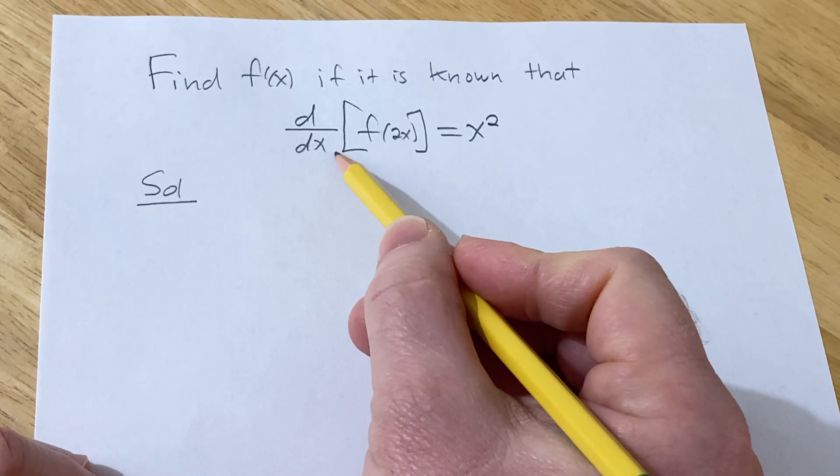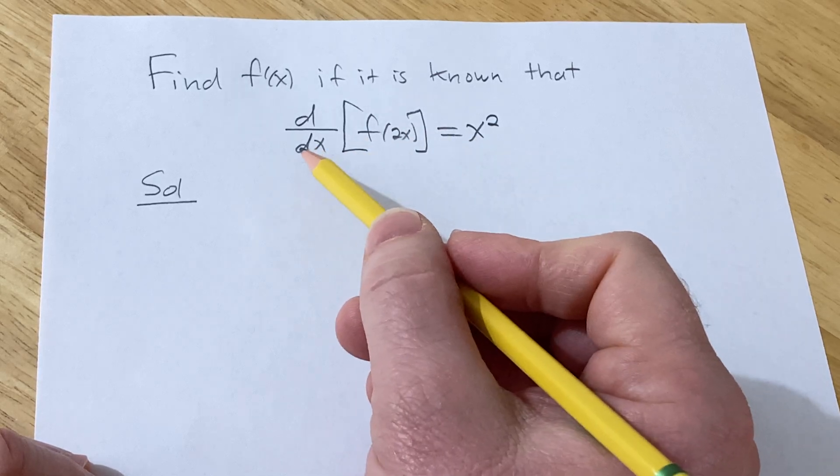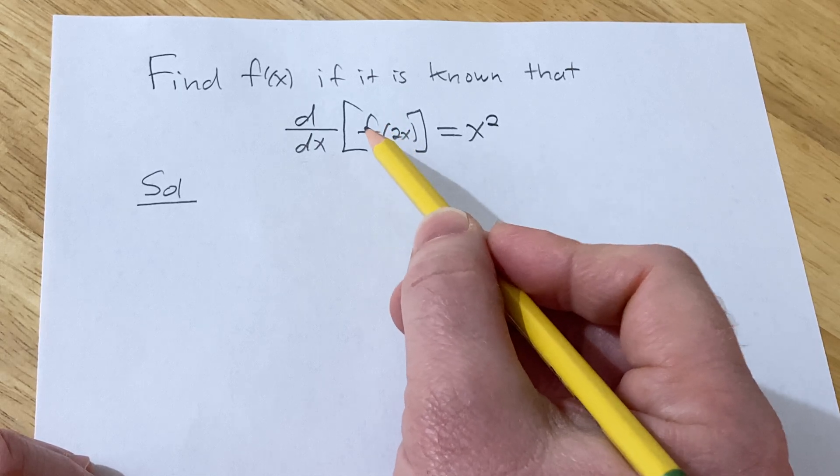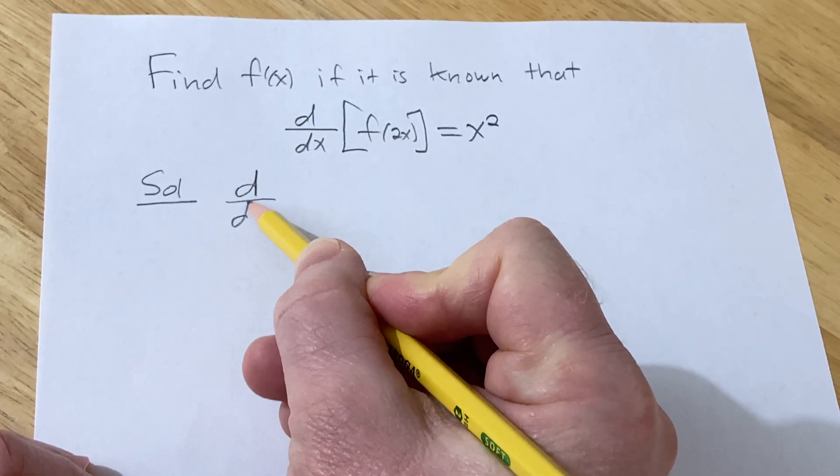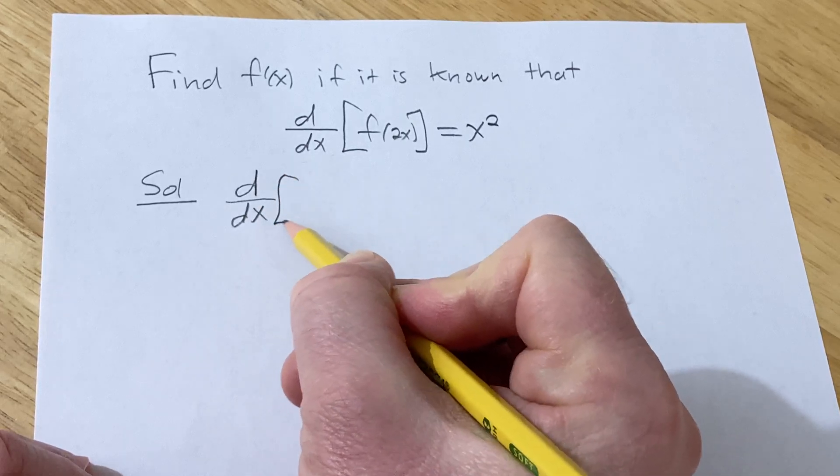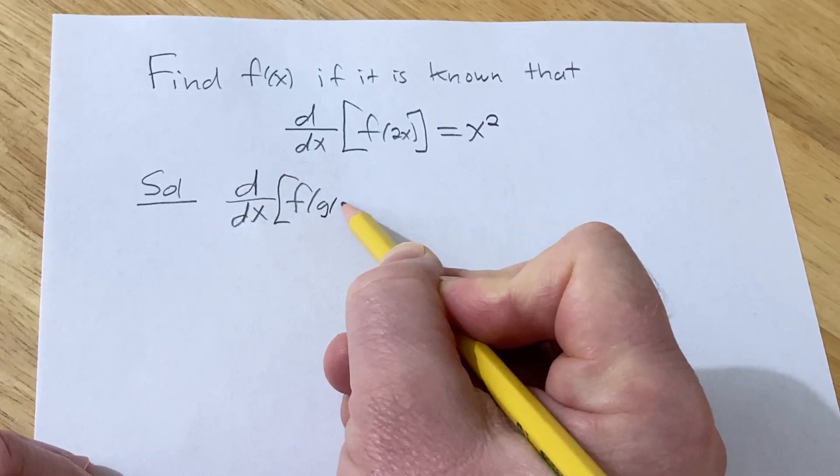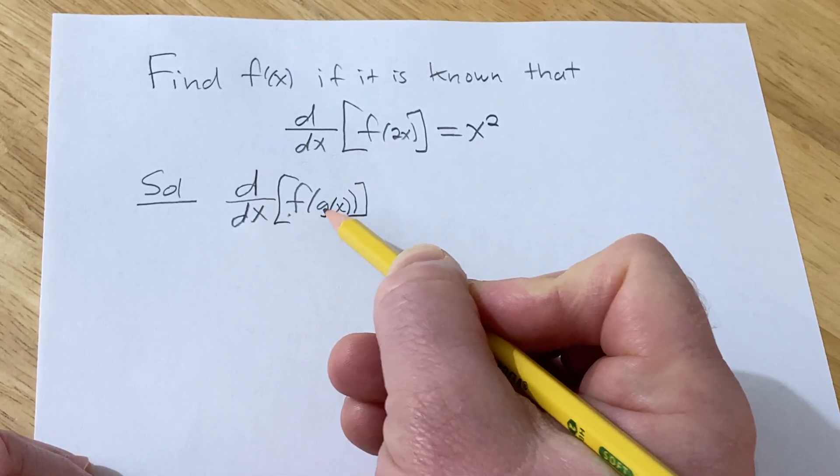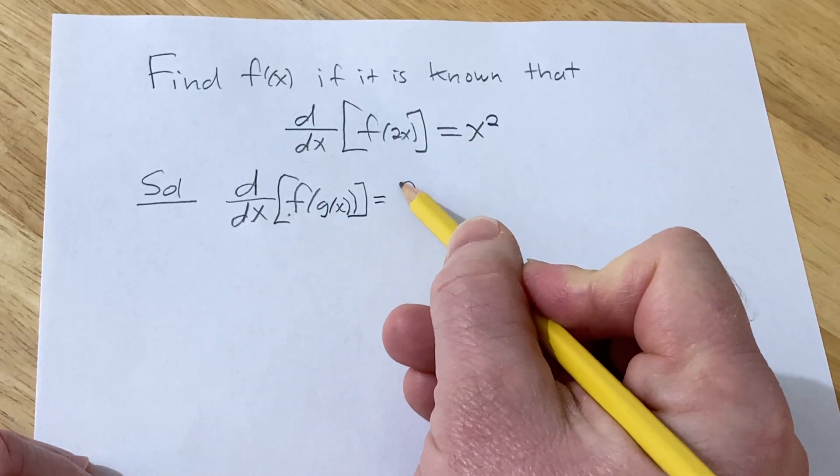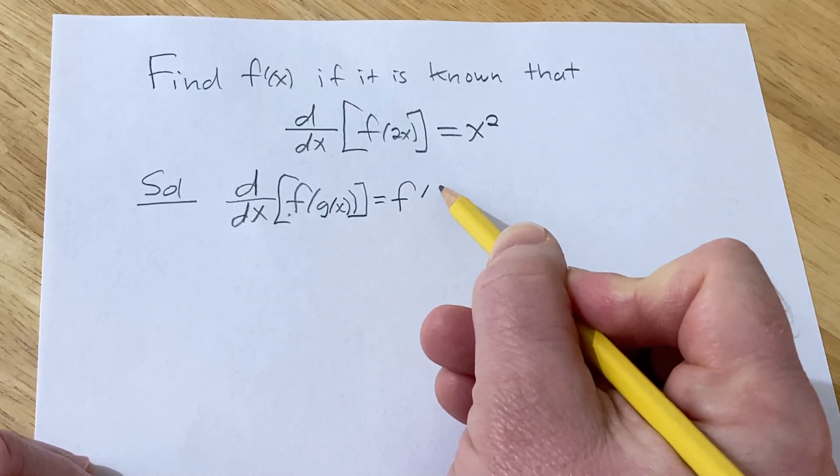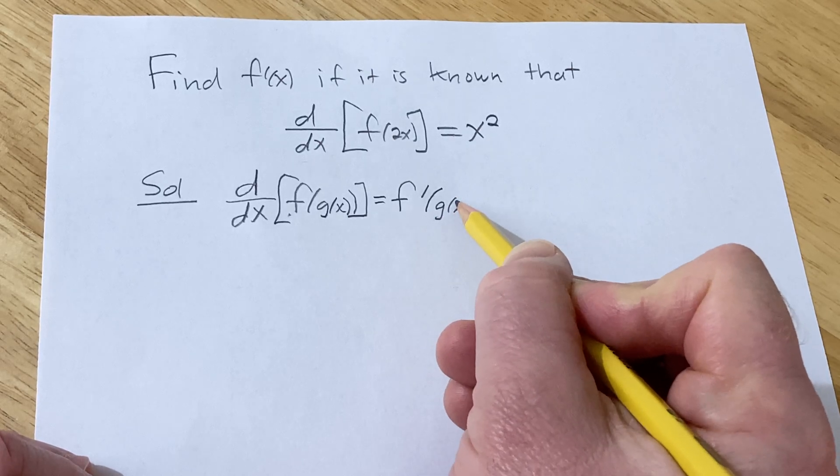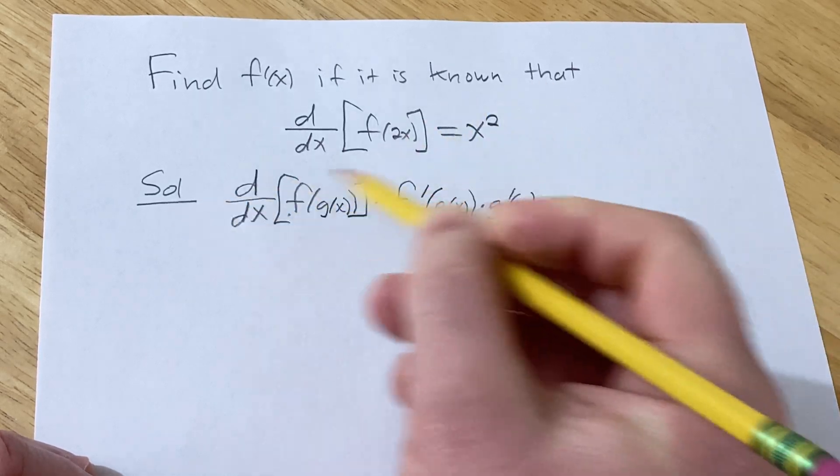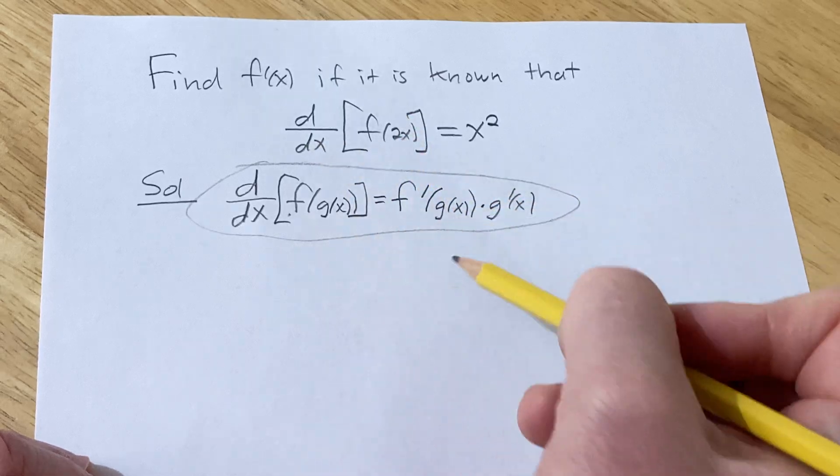So we're told that the derivative of f of 2x is equal to x squared. The natural thing to do is to compute that derivative using the chain rule. Recall if you have the derivative with respect to x of f of g of x, you can think of f as your outside function and g as your inside function. You take the derivative of the outside, evaluate it at the inside so you leave it untouched, and then multiply by the derivative of the inside. This is called the chain rule and it's very powerful.